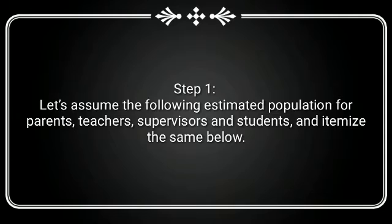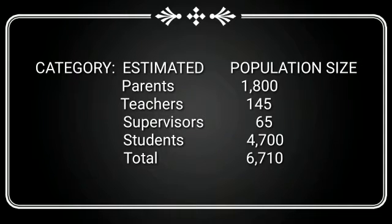Step 1. Let's assume the following estimated population for parents, teachers, supervisors and students. And itemize the same below. Category, Estimated Population Size: Parents 1,800, Teachers 145, Supervisors 65, Students 4,700, Total 6,710.